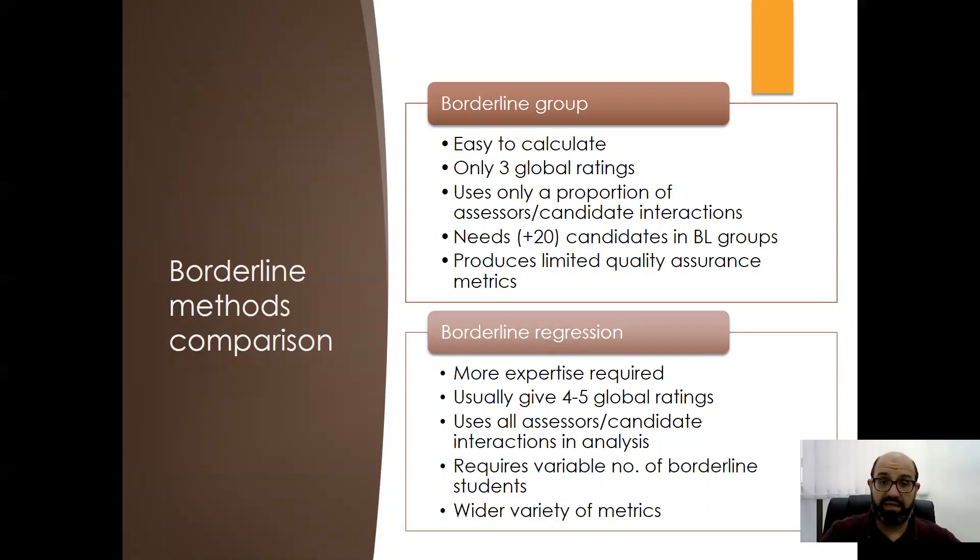So you are only selecting the borderline group, not the whole cohort of students and you need more than at least 20 students to be able to calculate the pass mark based on the borderline group method.